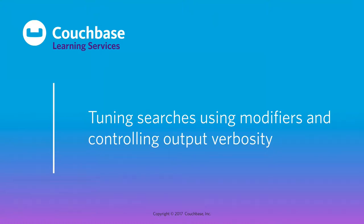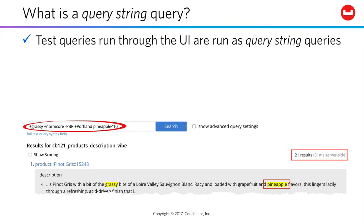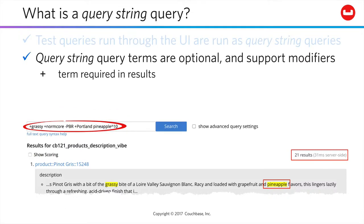In this lesson, you'll learn how to tune query string searches, how to control output verbosity, and how to run your queries and control other behaviors via the REST API. In the first lesson, we learned that Couchbase runs 15 different types of full-text query. So far, you've only used one of them. Everything you do through the UI for testing purposes is what is called a query string query — a useful query type with features corresponding to what a lot of users expect.